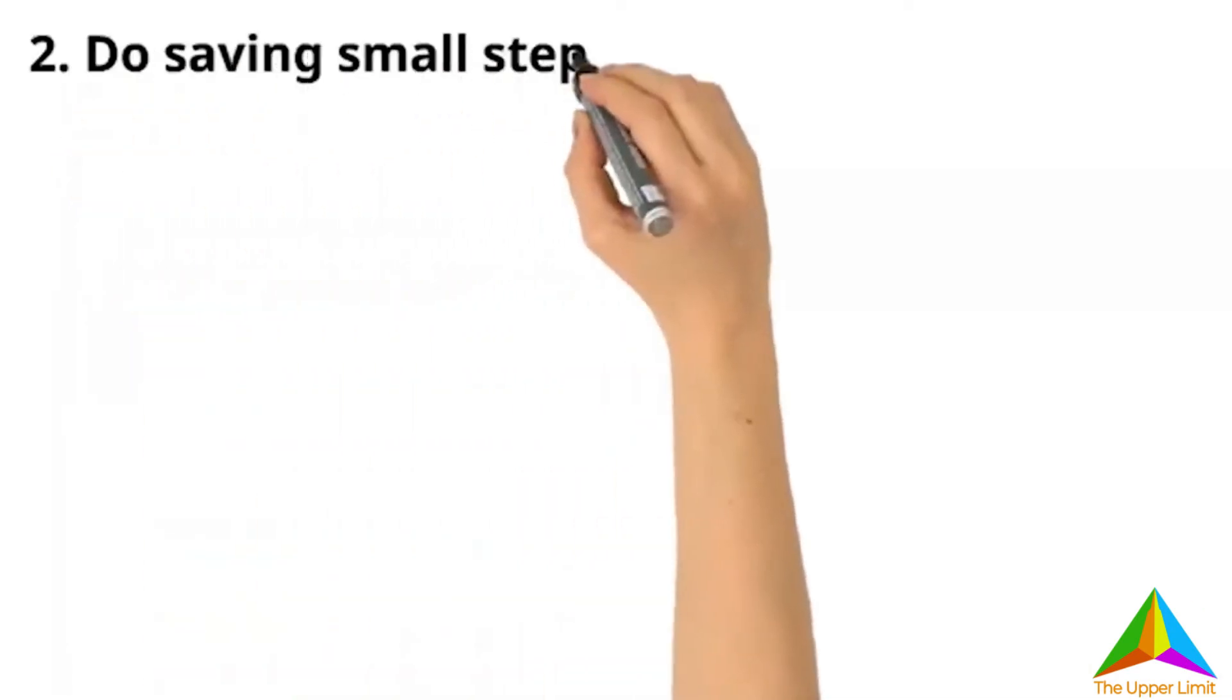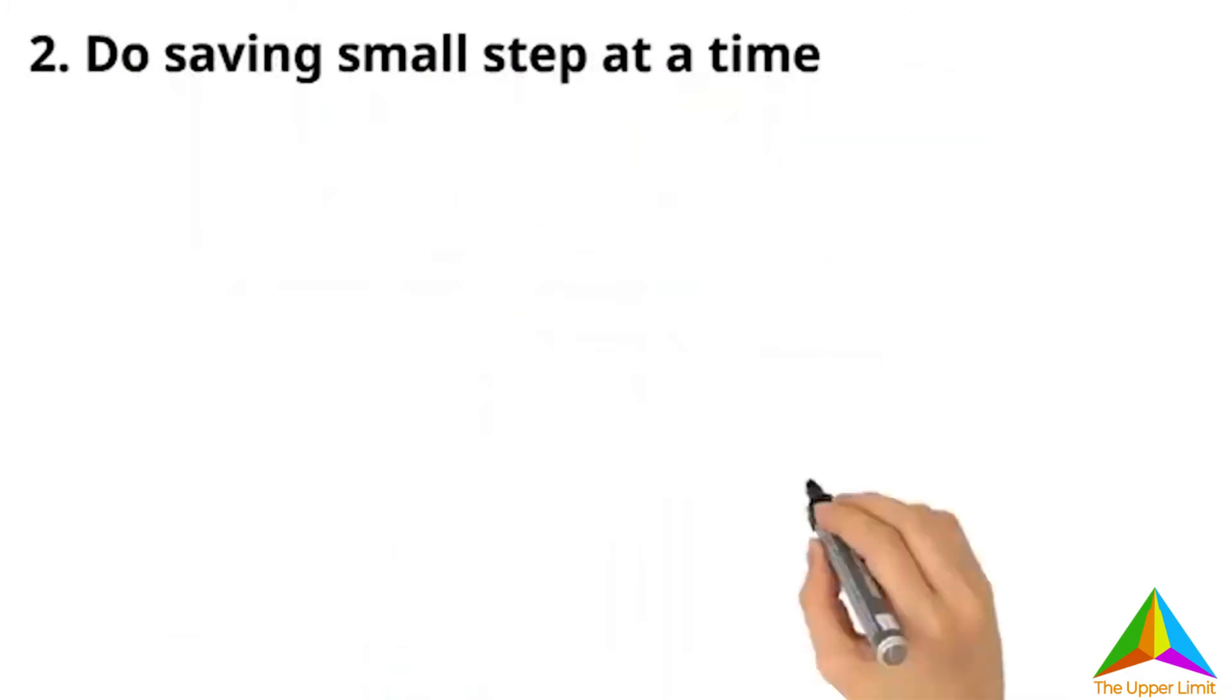Second, do saving small step at a time. Sometimes, the hardest thing about saving is just getting started. You can start saving by putting your money in a piggy bank. The old way of saving, but still effective until today.